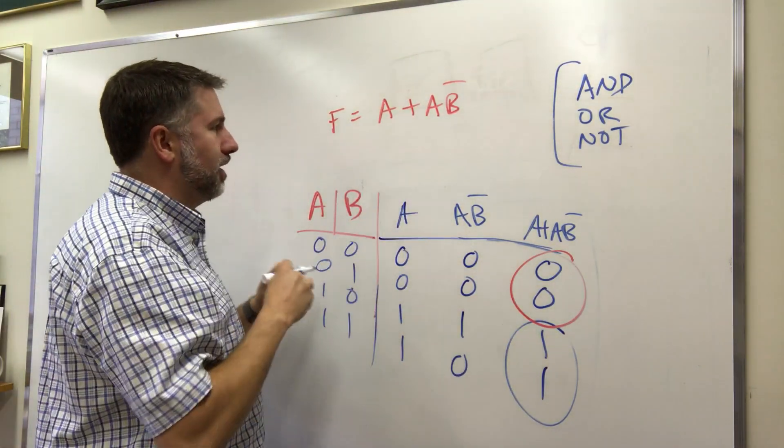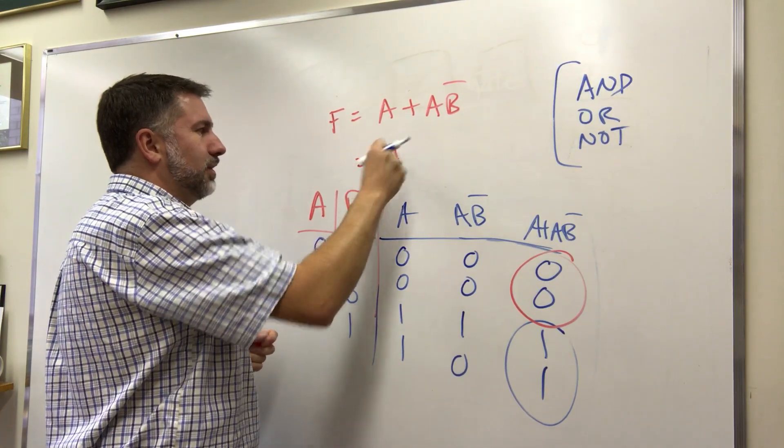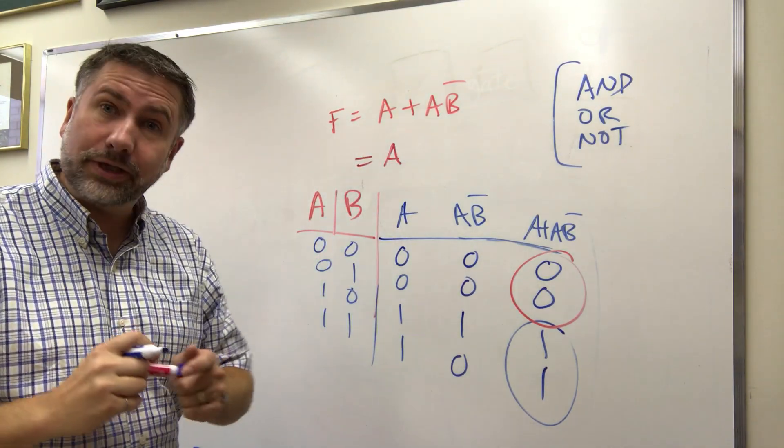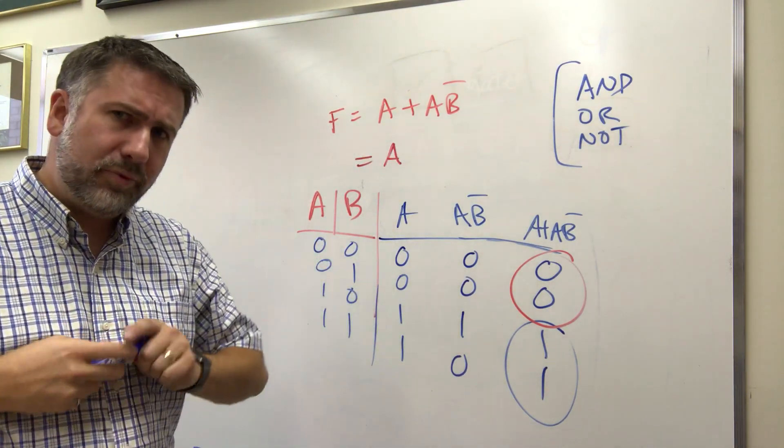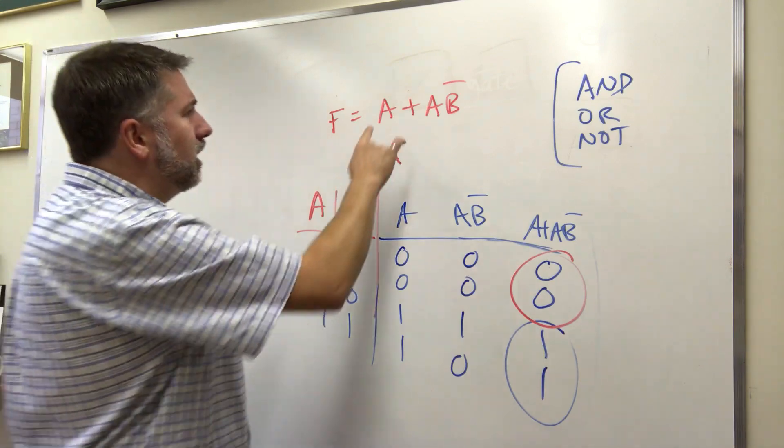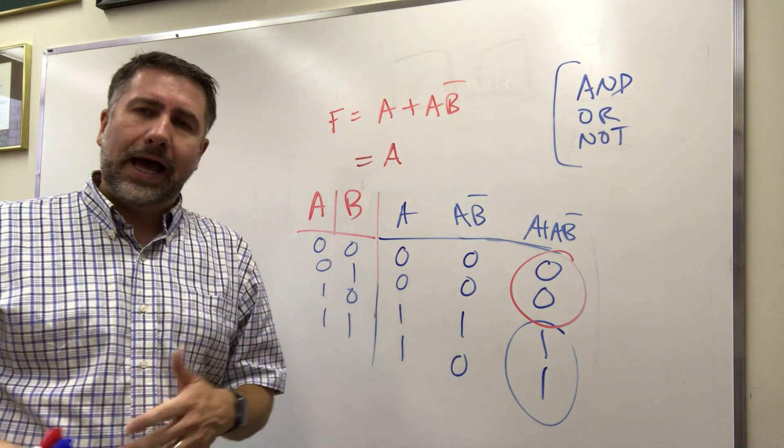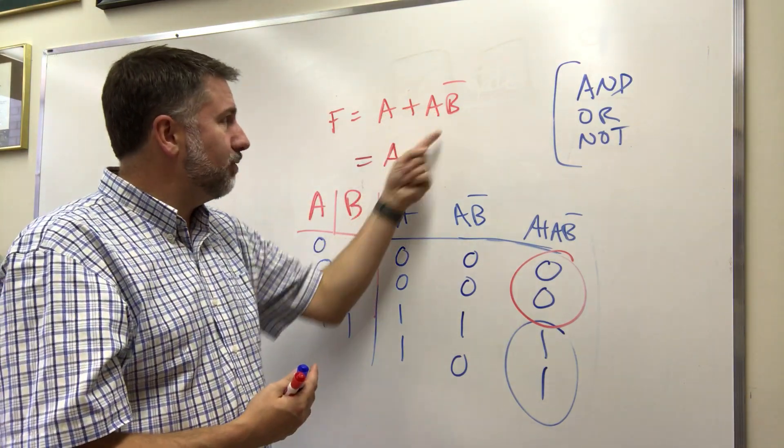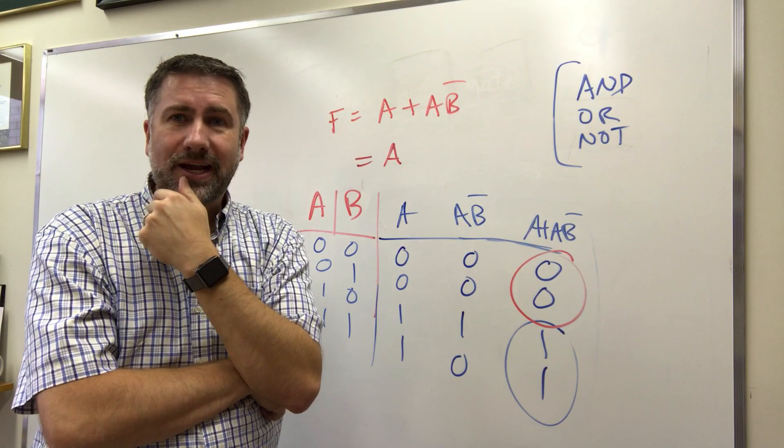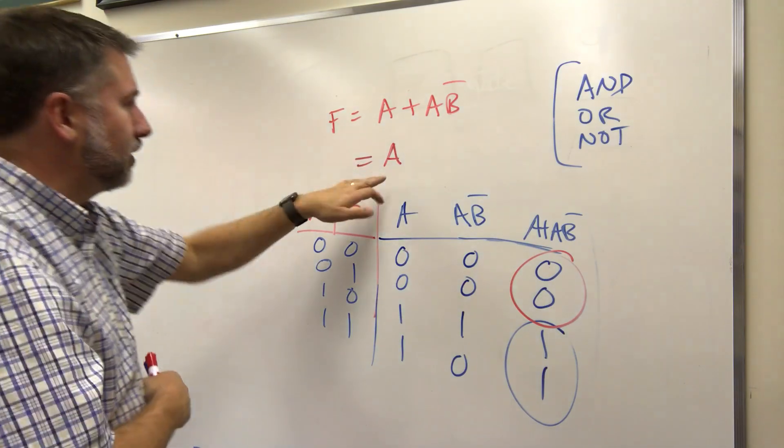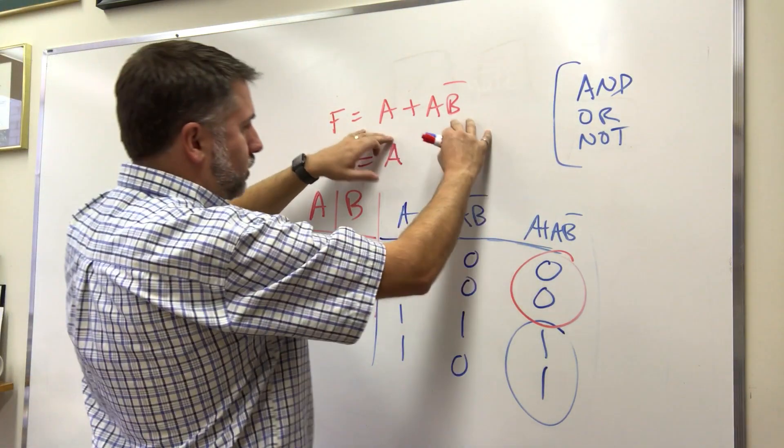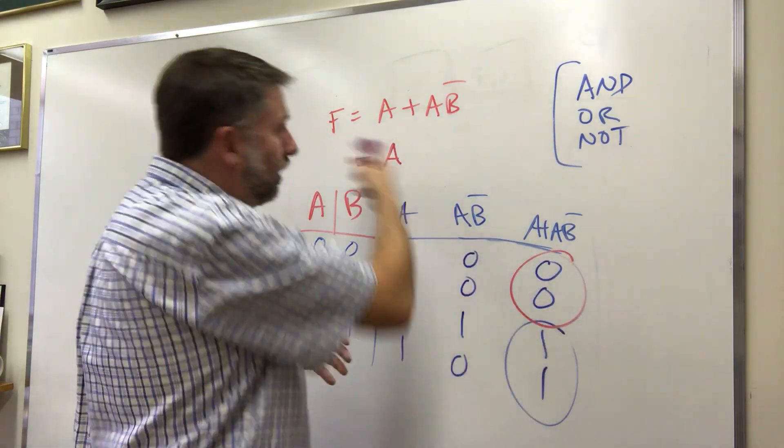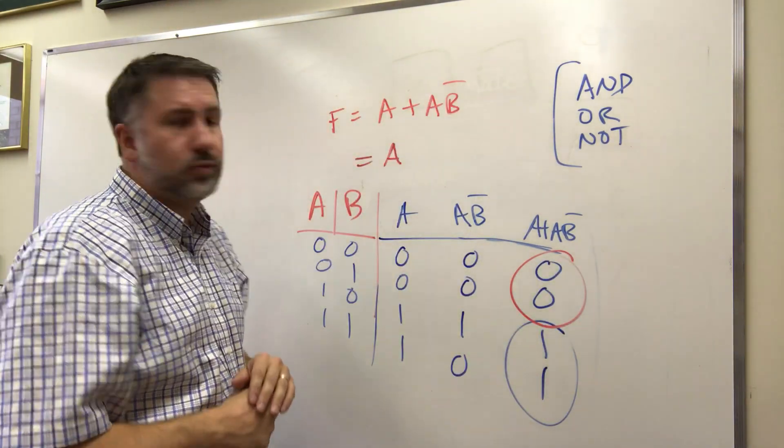So A or A B prime is just equal to A. That's really kind of neat. Maybe we could use that later on if we ever see A or A B prime as a component of some larger function we can just get rid of the A B prime and put A there. So this is a neat little result that we can take an expression and simplify it and discover that it's a universal simplification we can use other places.